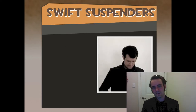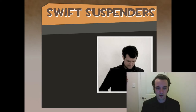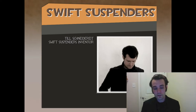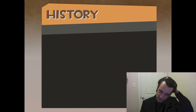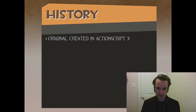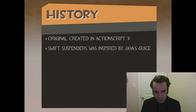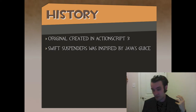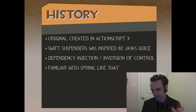Swift Suspenders was actually the dependency injection library that Robot Legs was built around — it was really the core of how a lot of things work. It was developed by Till — I can't pronounce his last name. His Swift Suspenders library was based on the Java version of Guice. It was originally created in ActionScript 3, a strongly typed language with the ability to set metadata — completely different from Lua. Swift Suspenders was inspired by Java's Guice, which is a dependency injection or inversion of control framework, similar to Java Spring.